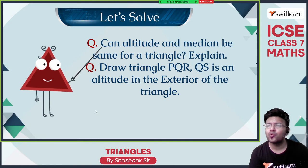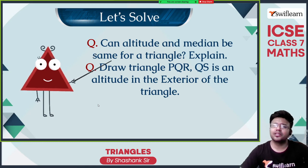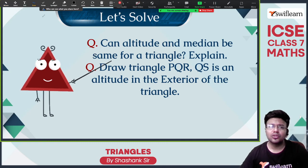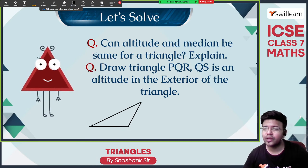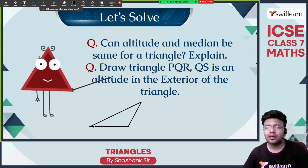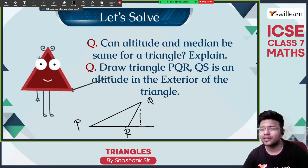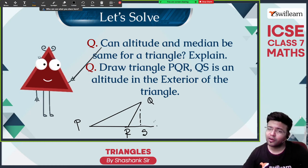Draw the triangle PQR with QS as an altitude in the exterior of the triangle. To draw an exterior altitude, you should choose an obtuse angled triangle — only then can you draw an exterior altitude. So we have triangle PQR: P, Q, R are the vertices. The dotted line drawn is QS — QS is an altitude in the exterior of the triangle.